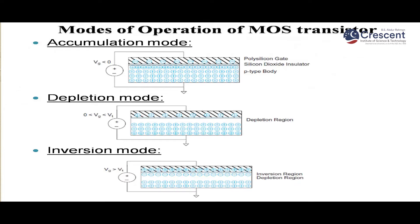There are three modes of operation: accumulation mode, depletion mode, and inversion mode. In accumulation mode, the gate voltage is less than 0. Charge carriers accumulate in their own regions — majority holes accumulate in the P-substrate, and negative ions accumulate in the polysilicon layer.